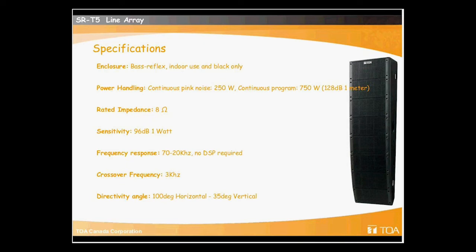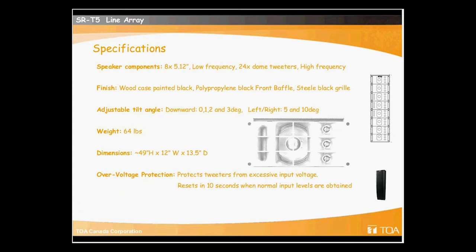The crossover built in for the two speaker drivers inside is set at 3 kilohertz. This gets it out of the voice band of importance, which is around 2 kilohertz. The directivity angle for the vertical is 35 and the horizontal is 100 degrees, so we have very good directivity control over this speaker. If we continue on with the specifications, you can see that each cabinet has one 5-inch driver and three dome tweeters. If we look at the whole complete unit, we have eight low-frequency drivers and 24 dome tweeters.